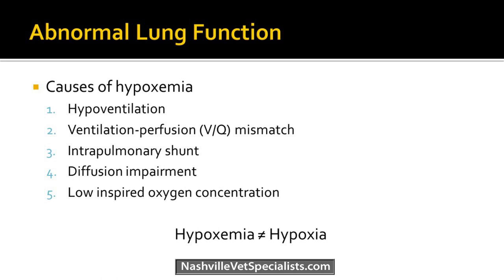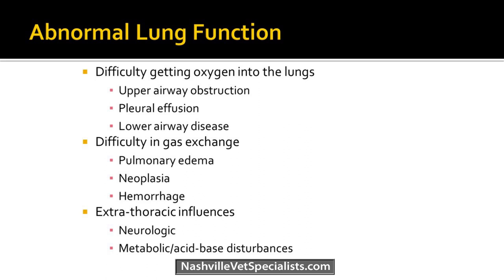Hypoxemia does not equal hypoxia — hypoxemia is low oxygen in the blood, while hypoxia is low oxygen in the tissues. More clinically, think about issues getting air into the lungs — upper airway obstructions, pleural effusion, lower airway damage — difficulty with gas exchange at the blood-gas barrier from pulmonary edema, cancer, or hemorrhage, and things outside the lungs such as neurologic issues affecting the respiratory center in the brain, or metabolic and acid-base disturbances causing dyspnea.